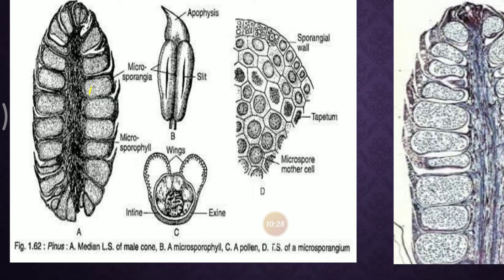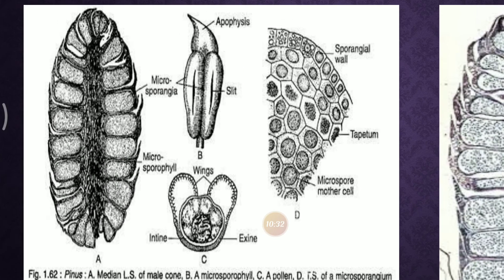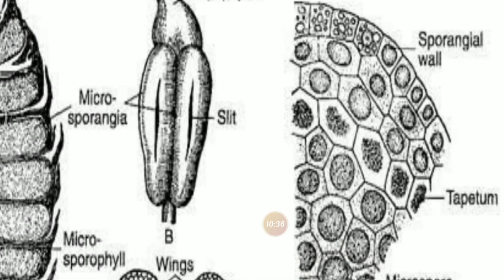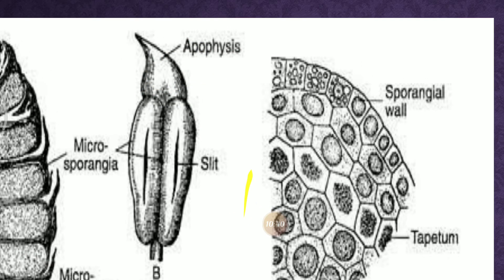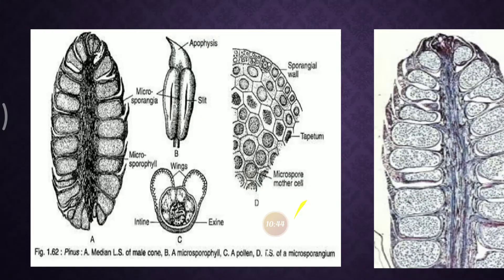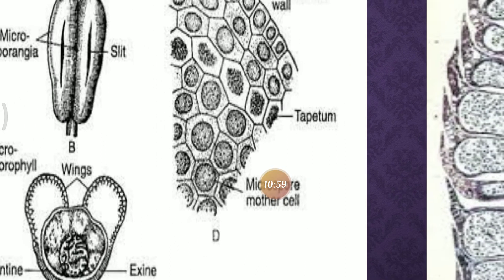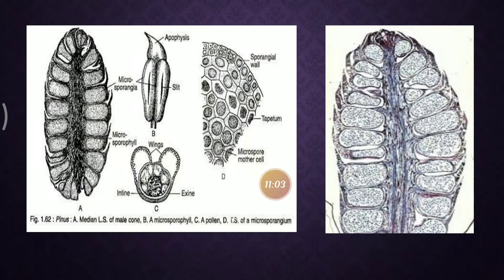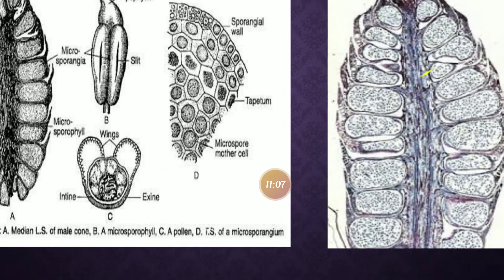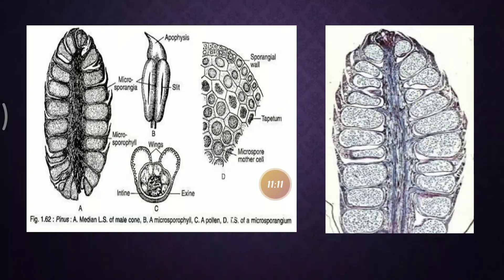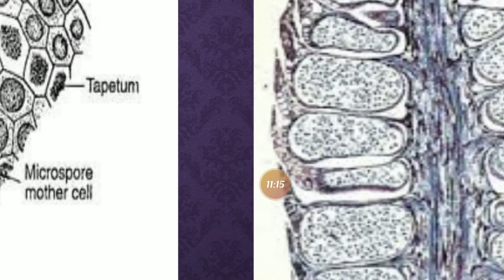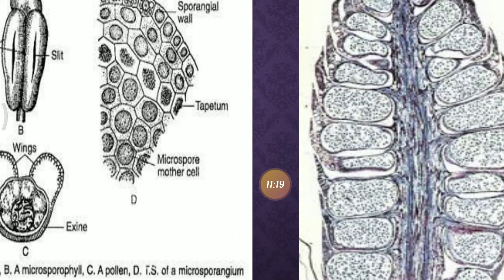In the male cone section, the apophysis is visible at the tip, along with the microslit stalk-like structure, and the sporangial wall. In the section of a microsporangium, the sporangial wall tapetum is present, which provides nourishment to the pollen grains, and mother microspore cells are also present. Each fertile microsporophyll bears two microsporangia on its lower side.